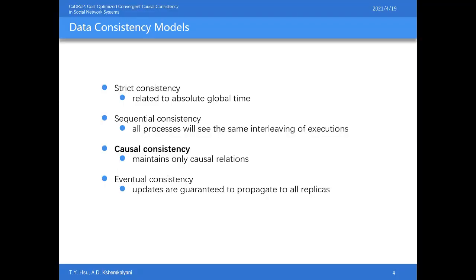This is an overview of some well-known consistency models, arranged vertically by their synchronization degree. At the top, strict consistency is the strongest model: all write operations are instantaneously visible to all processes, requiring one global time order. However, this is impossible to implement in distributed systems. In the middle is causal consistency, which maintains causal relations. At the bottom, eventual consistency requires that update operations propagate to all replicas, so eventually all reads return the last updated value.